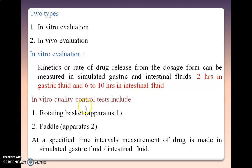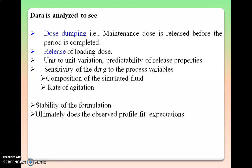In vitro quality control tests include rotating basket and paddle type apparatus, the same as dissolution testing already discussed. The drug release data obtained is analyzed to see: dose dumping — whether the maintenance dose is released before the period is completed; release of loading dose within the specified time; unit-to-unit variation; predictability of release properties; sensitivity of drug to process variables like composition of simulated fluid and rate of agitation; stability of the formulation throughout the release period; and whether the observed profile fits the expected profile.